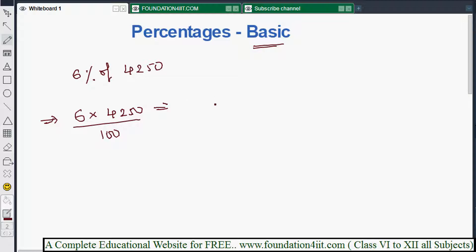If you multiply 6 into 4250, that is 0, then 5 times 4 is 30, 3, 42, 12, 3, 15, 16, 40. So if you multiply, you get 25,500. This divided by 100...